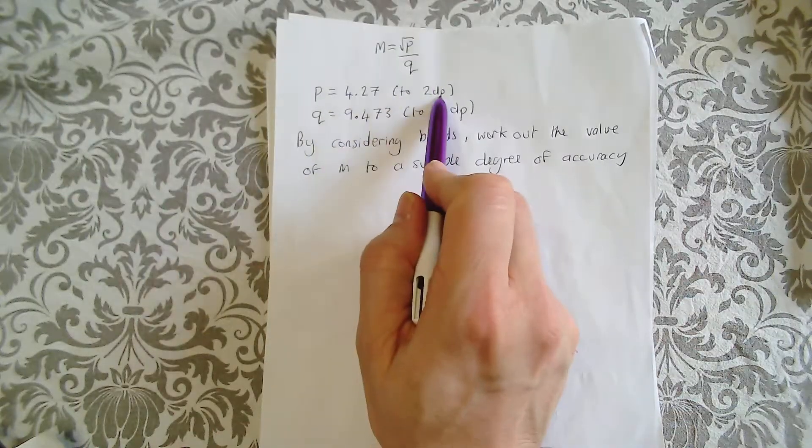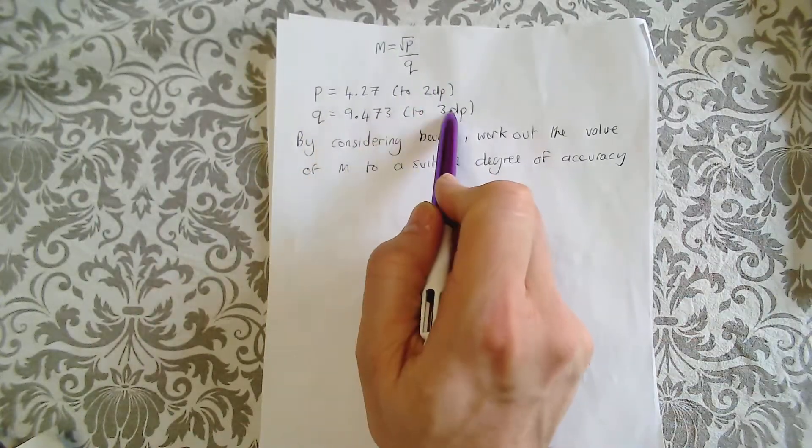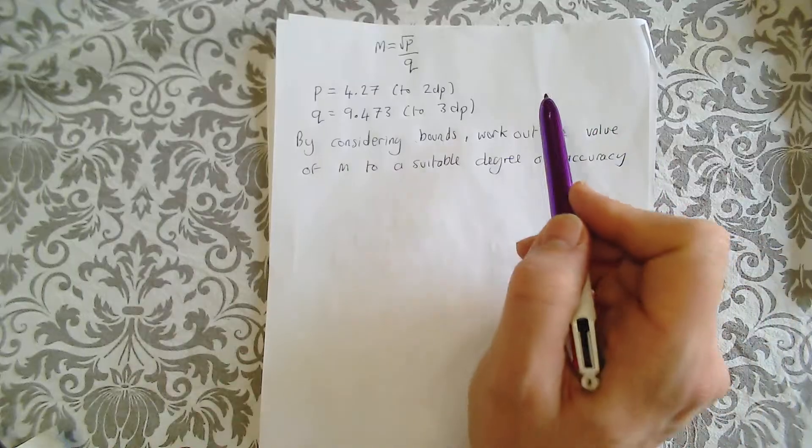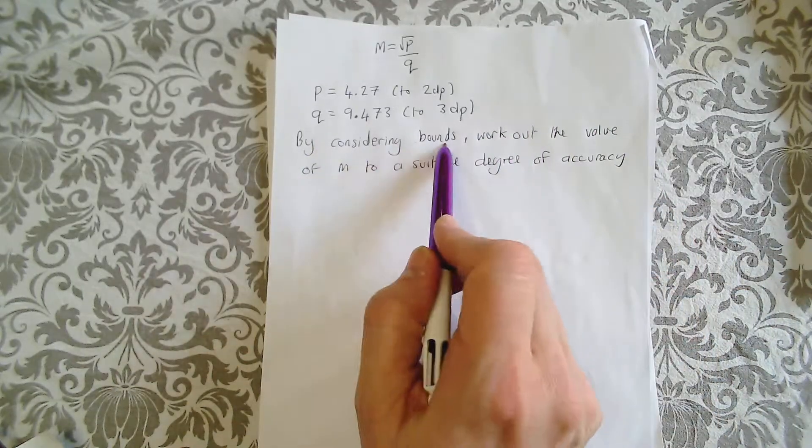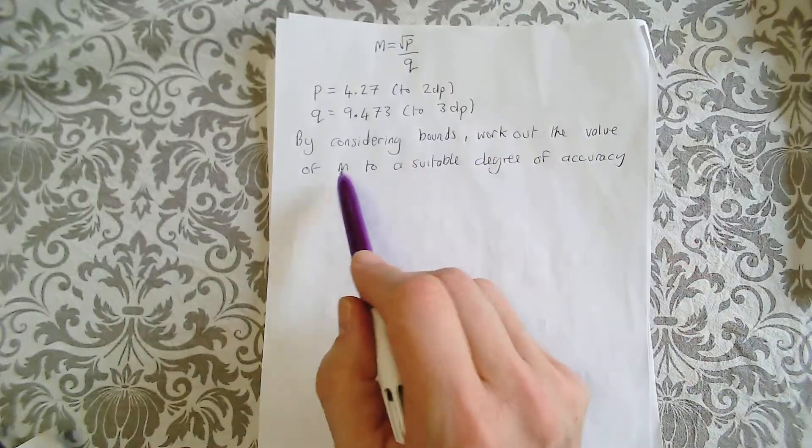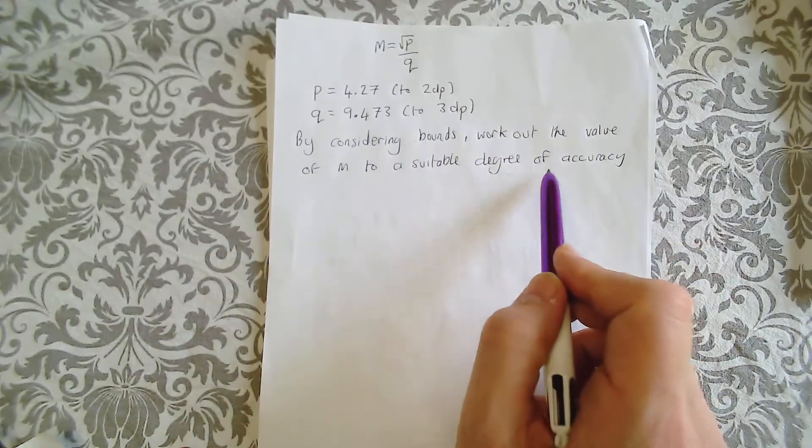P is given to two decimal places. Q is given to three decimal places. Typically it will be phrased like this in the exam: by considering bounds, work out the value of M to a suitable degree of accuracy.